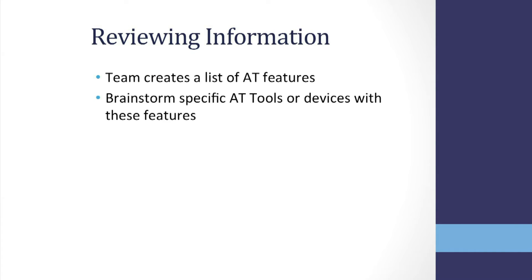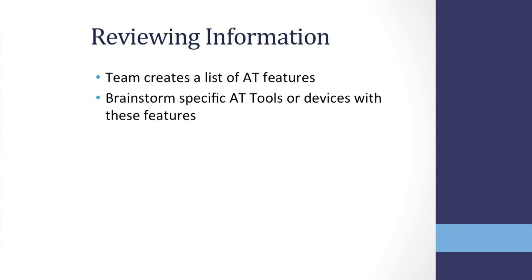Based on information gathered about the student, environments, and tasks, the team will create a list of assistive technology features that the student may need to progress in those educational settings. Examples of AT features possibly needed for writing may be word prediction, dictation, graphic organizers, etc. The team will then need to brainstorm specific AT tools or devices that have these features and may need to be trialed with the student.